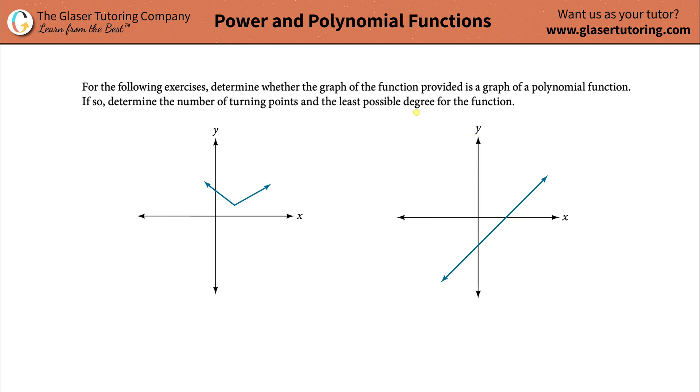For the following exercises, determine whether the graph of the function provided is a graph of a polynomial function. And if so, determine the number of turning points and the least possible degree for the function.